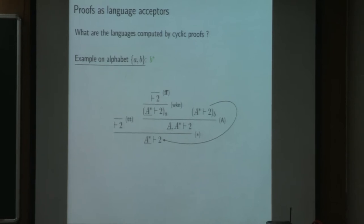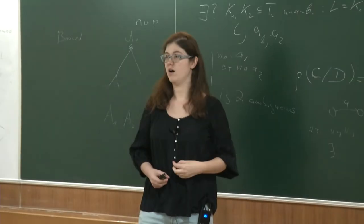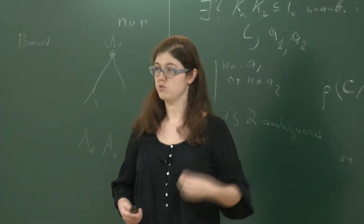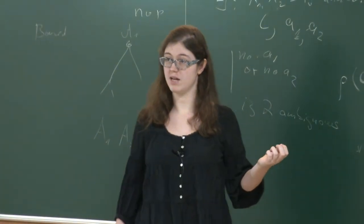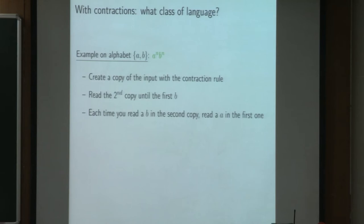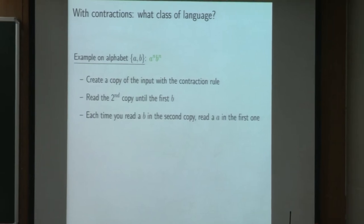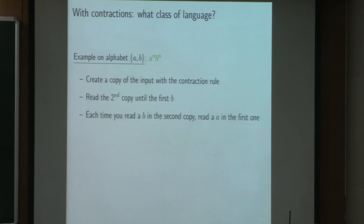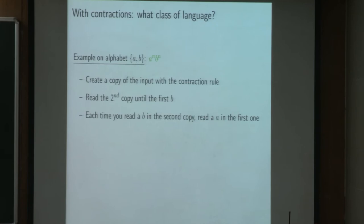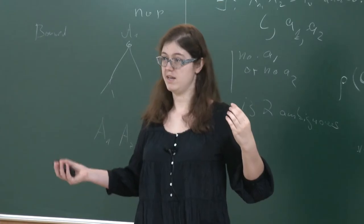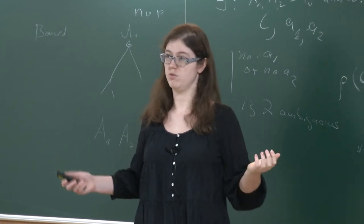You can see that it looks like how an automaton will function to recognize the B star. And in fact, we have the following results. That is without a contraction rule, the proof system is exactly recognizing the regular languages. And we have an effective translation from a proof to a DFA and from a DFA to a proof.